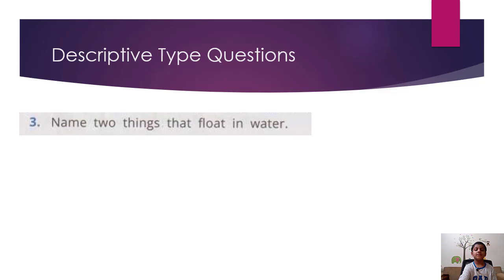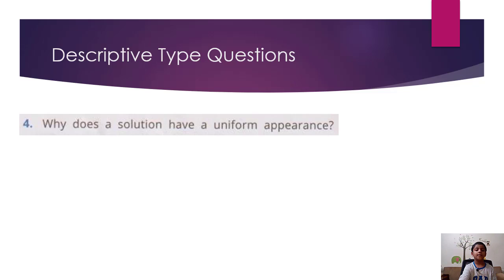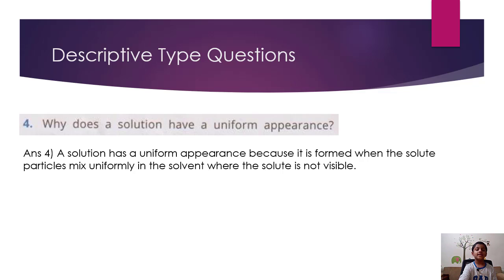Name two things that float in water. Papers, plastic bottles, etc. float in water. Why does the solution have a uniform appearance? The solution has a uniform appearance because the solute particles mix uniformly in the solvent where the solute is not visible.